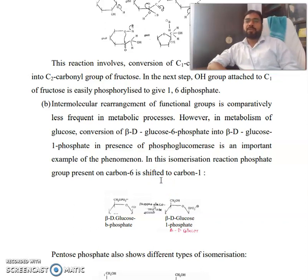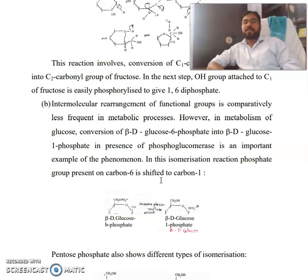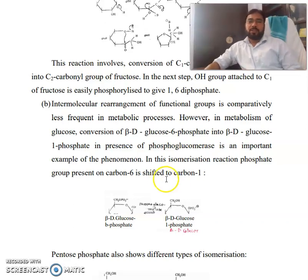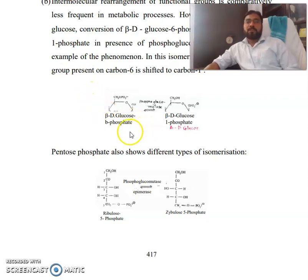Now, intramolecular arrangement of functional groups is comparatively less frequent in metabolic processes. However, in the metabolism of glucose, conversion of beta-D-glucose-6-phosphate into beta-D-glucose-1-phosphate in the presence of phosphoglucomutase is an important example. In this isomerization reaction, the phosphate group present on carbon-6 is shifted to carbon-1, giving beta-D-glucose-1-phosphate.